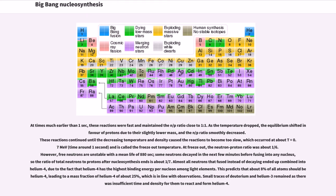Almost all neutrons that fused instead of decaying ended up combined into helium-4, due to the fact that helium-4 has the highest binding energy per nucleon among light elements. This predicts that about 8% of all atoms should be helium-4, leading to a mass fraction of helium-4 of about 25%, which is in line with observations. Small traces of deuterium and helium-3 remained as there was insufficient time and density for them to react and form helium-4.